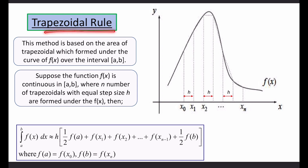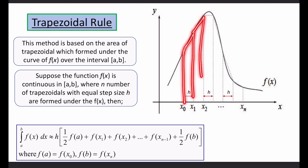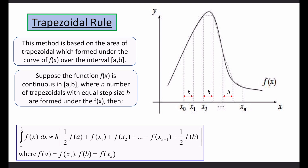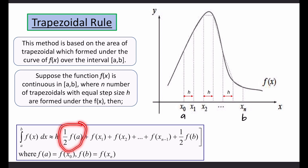For the trapezoidal rule, we approximate the area under the curve by using the area of trapezoids. Using this rule, the integration equals h multiplied by: (1/2)f(a) + f(x₁) + f(x₂) + ... + (1/2)f(b), where a is the starting point and b = xₙ is the upper limit.